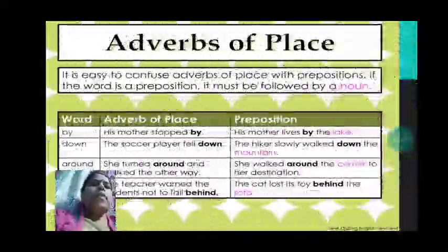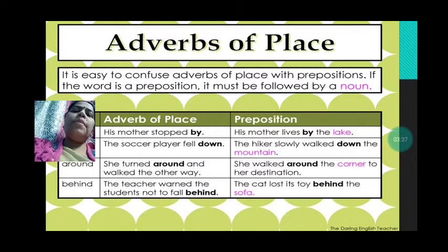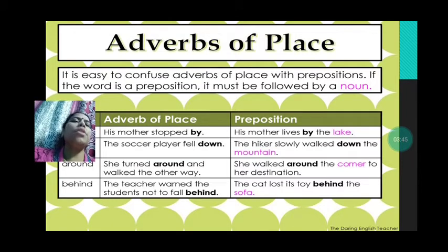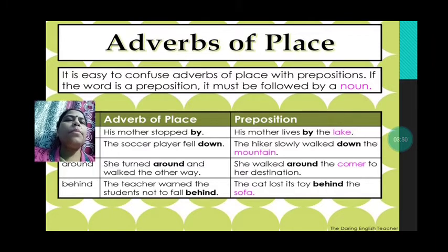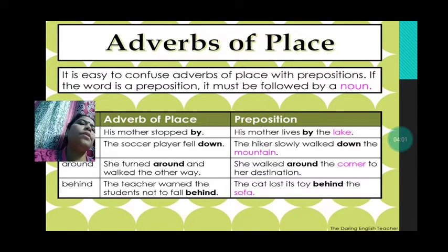Now let us understand adverb of place. Don't be confused with adverb of place and preposition — it is easy to confuse them. If the word is a preposition, it must be followed by a noun. So you have to keep in mind: if it is a preposition, it will be followed by a noun.